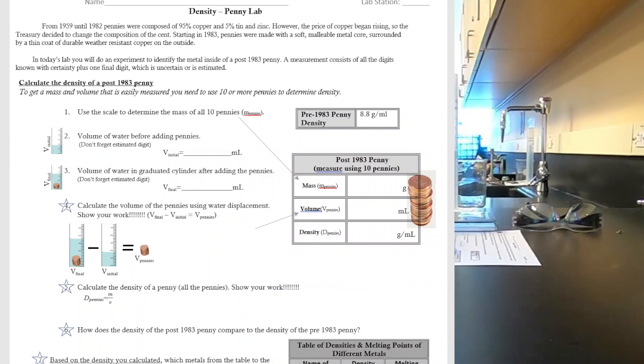In our penny lab, the basic gist is that we took 10 pennies dated 1984 or later and measured the mass and volume of the original pennies—just a stack like in our picture here. Then we melted the inside of the pennies, since the metal inside melts before the copper coating on the penny.